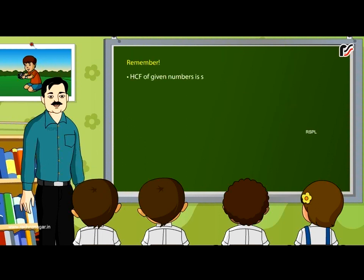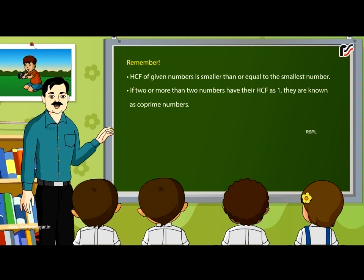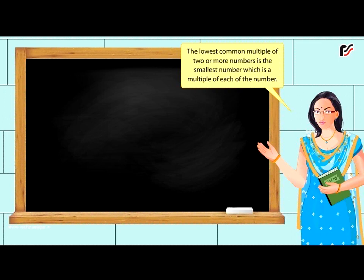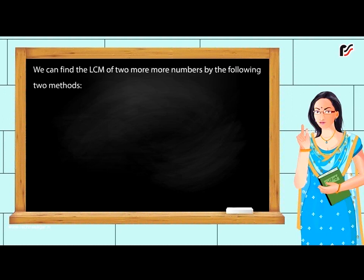Remember, HCF of given numbers is smaller than or equal to the smallest number. If 2 or more numbers have HCF as 1, they are known as co-prime numbers. Least Common Multiple (LCM): The lowest common multiple of 2 or more numbers is the smallest number which is a multiple of each of the numbers. We can find the LCM by two methods: LCM by prime factorization method and LCM by division method.